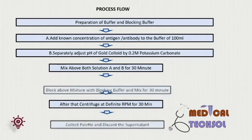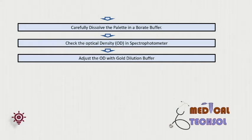Conjugation process: 1. Preparation of coating buffer or blocking buffer. 2. Preparation of solution A. 3. Separately in a container, adjust the gold colloid pH using 0.2 molar potassium carbonate solution. 4. Slowly mix solutions A and B for 30 minutes. 5. Block the above mixture with blocking buffer and mix for 30 minutes. 6. Centrifuge at a definite RPM for 30 minutes. 7. Collect the pellet and discard the supernatant. Carefully dissolve the pellet in borate buffer. 8. Check the optical density (OD) in the spectrophotometer. 9. Adjust the OD with the gold dilution buffer.